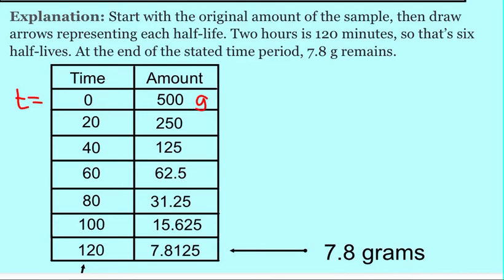We continue doing this every 20 minutes and mark down how much we have in the amount. At 40 minutes, we now have half the amount of 20 minutes, which is 125. At 60 minutes, we're at half that amount, 62.5.